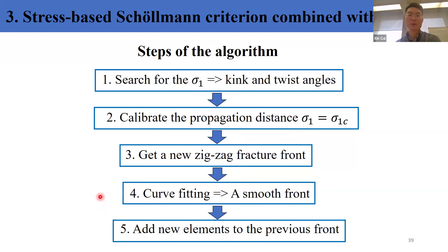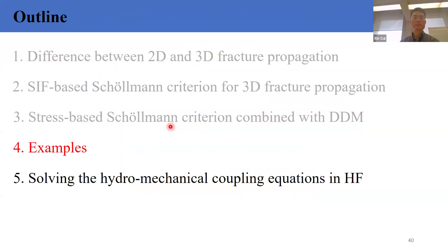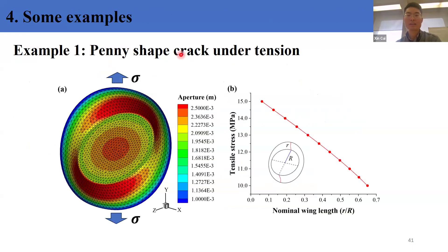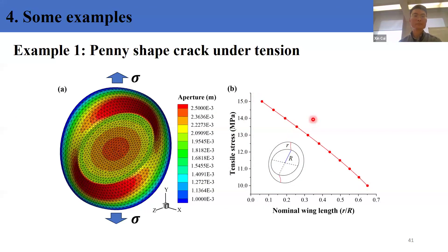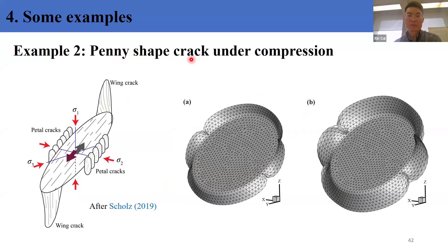These are the steps of this algorithm: first, numerically search for the maximum local tensile stress to get the kink and twist angles; then calibrate the propagation distance to make sigma-1 equal to the critical value; obtain the new zigzag fracture front; carry out curve fitting to get a smooth front; add new elements to the previous front to finish one step of propagation. For multiple propagation steps, we redo this process. The first example is a penny-shaped crack under tension — as the fracture size increases, the required far-field tensile stress actually decreases.